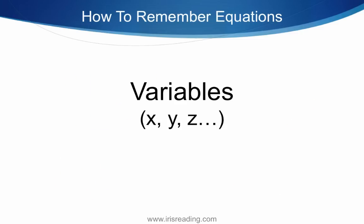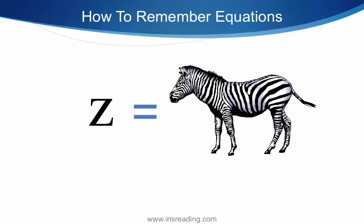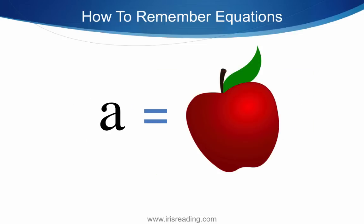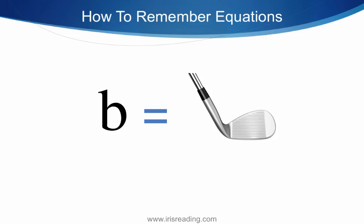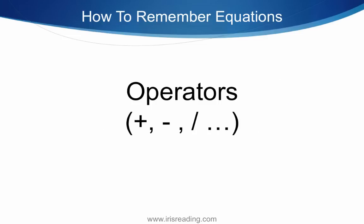So X could be an airplane runway crisscrossing. Y could be a wishbone. Z could be a zebra. A could be Apple. B could be something golf related. C could be Pac-Man or a cat. And then of course the operators.